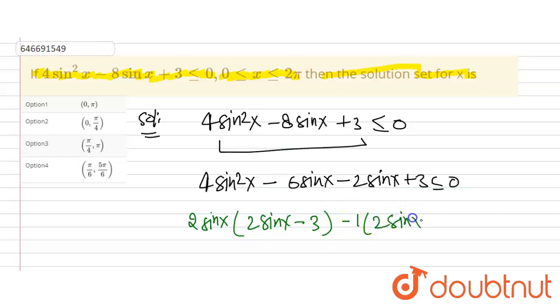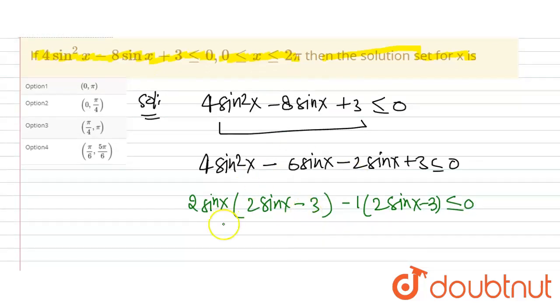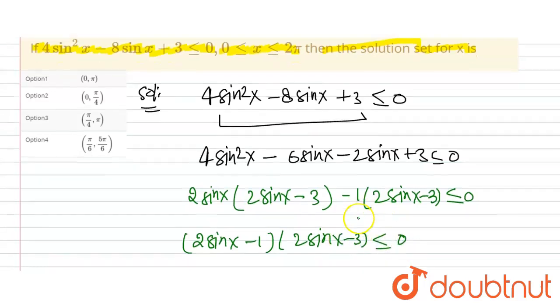So this is (2sinx - 3) ≤ 0. Now we are getting (2sinx - 1)(2sinx - 3) ≤ 0.